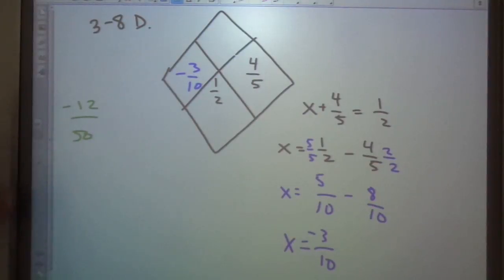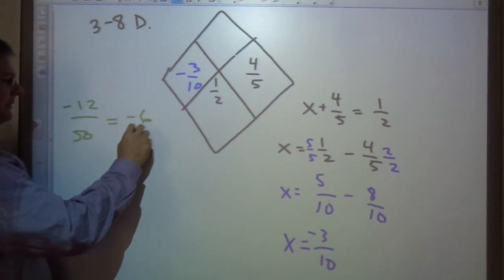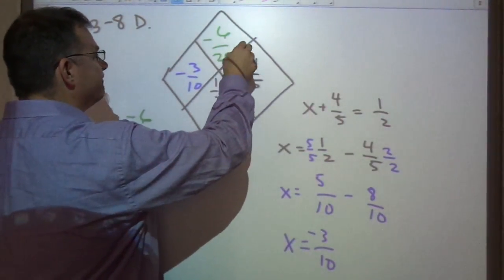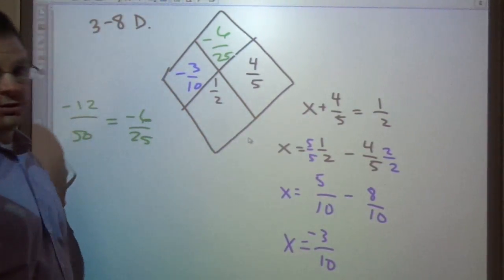And I can simplify that. I can divide top and bottom by 2. So there you go. That's a little tricky diamond problem.